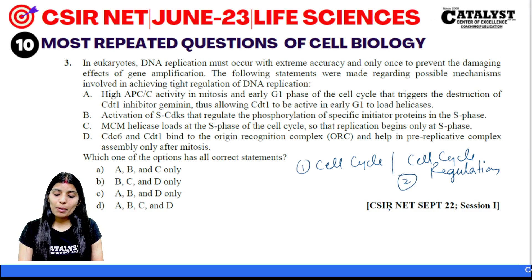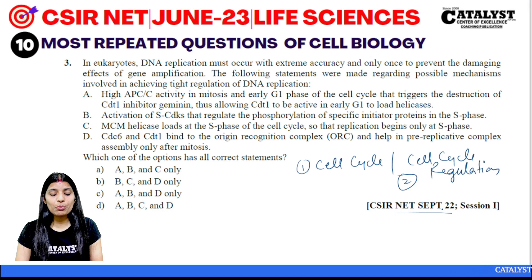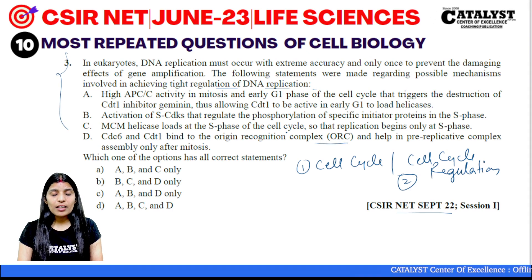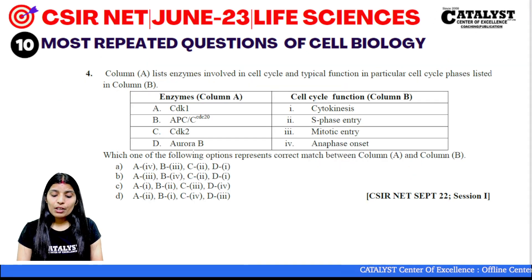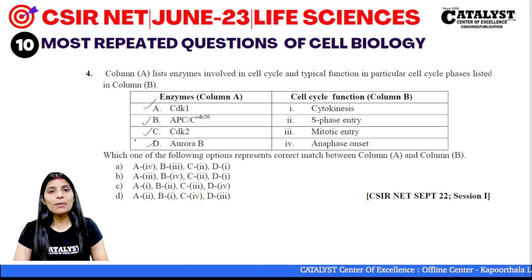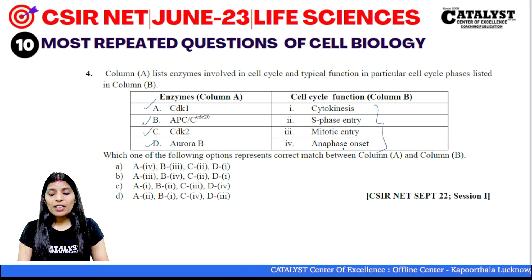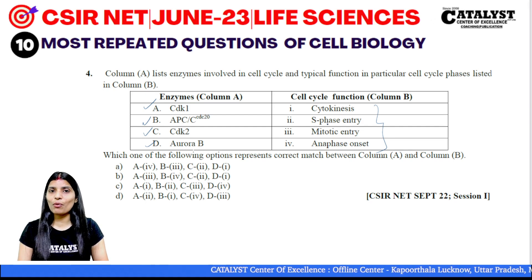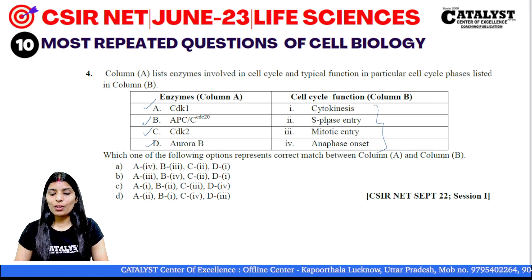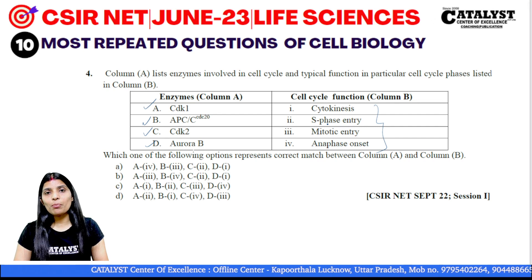You can see the first question from September 2022: the cell cycle is involved in achieving tight regulation of DNA replication — which is exactly related to cell cycle. The next question features CDKs, APC, CDK2, and Aurora B. There are different cyclins and CDKs involved in different phases of the cell cycle, including S phase and cytokinesis.